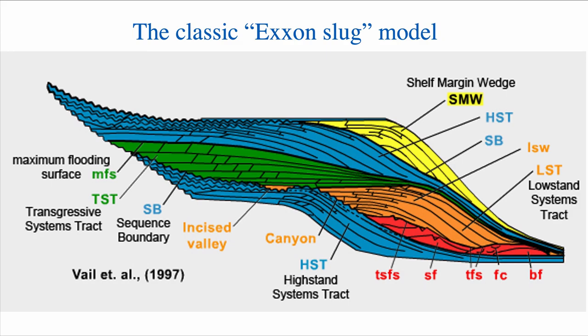Where are we going to find this? The most well-known diagram or model is known as the Exxon slug. The Exxon slug is not an invertebrate — it is a representation of what an idealized sequence would look like in a mostly clastic system. Here is a diagram of the Exxon slug; it is a rather complex diagram, but it shows a full sequence with its idealized geometries.